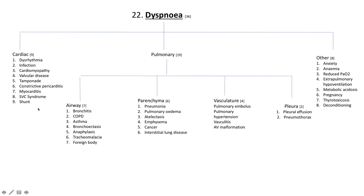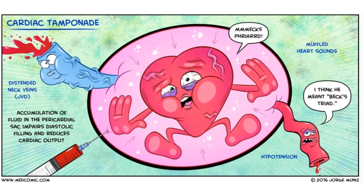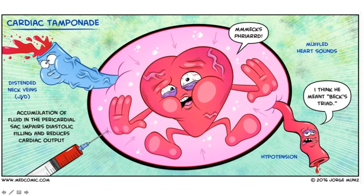A fun way to represent constrictive pericarditis or tamponade is in this beautiful picture here, courtesy of Mr. George Muniz over at medcomic.com. This is cardiac tamponade. When we think of cardiac tamponade we think of Beck's triad, which encompasses muffled heart sounds, hypotension, and distended neck veins. We see a needle coming in here because the management of cardiac tamponade — an accumulation of fluid in the pericardial sac which impairs diastolic filling reducing cardiac output — is pericardiocentesis.